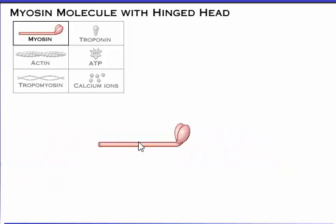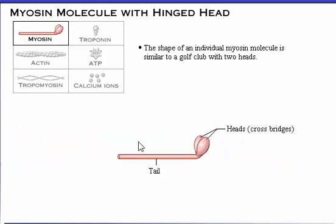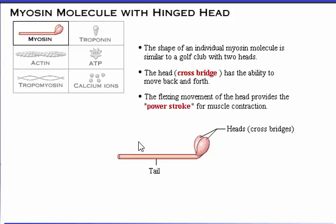The shape of an individual myosin molecule is similar to a golf club with two heads. Myosin has several important functional features. The head, or crossbridge, has the ability to move back and forth. The flexing movement of the myosin head provides the power stroke for muscle contraction. Click the head of the myosin molecule to see it move.